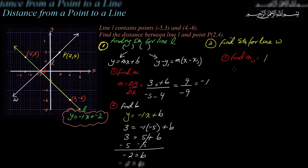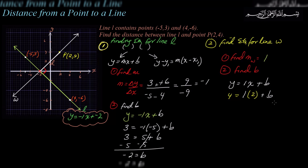Step two for line W: find B. I write my working equation: y equals 1x plus B. I know point P (2, 4) is on the line, so I substitute: 4 equals 1 times 2 plus B. Subtracting 2 from both sides gives B equals 2. So the equation of line W is y equals x plus 2.